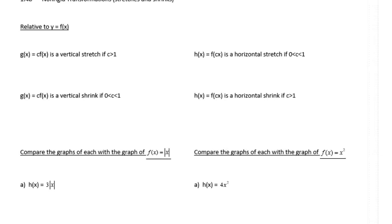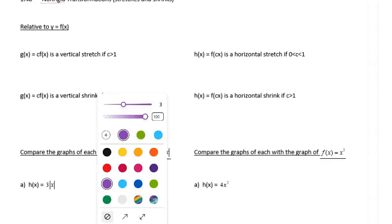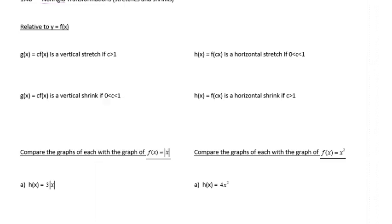1.4 Part B. We're talking about non-rigid transformations. Recall that non-rigid means it is not going to maintain the shape. So shape is not maintained.